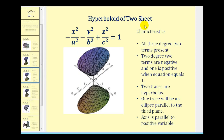Let's take a look at the hyperboloid of two sheets. Notice all three degree two terms are present, but now two of the degree two terms are negative and only one is positive when the equation is equal to positive one. So if we have two negative terms, it's going to be a hyperboloid of two sheets. We have two traces that are hyperbolas and one trace that is an ellipse. The elliptical trace may not be in the exact plane, but it will be parallel to the third plane. The axis will be parallel to the positive term — in this case the axis is parallel to the z axis because the z term is positive.